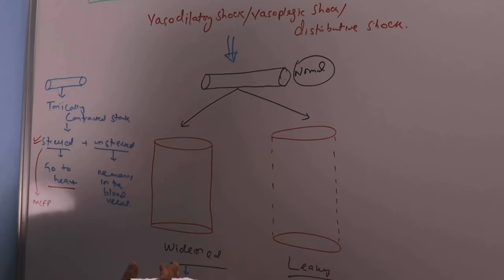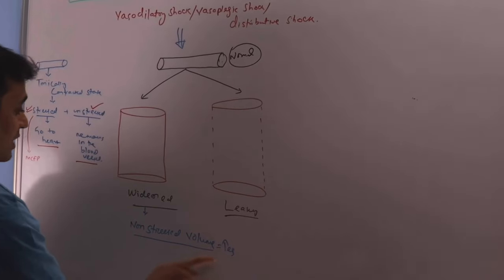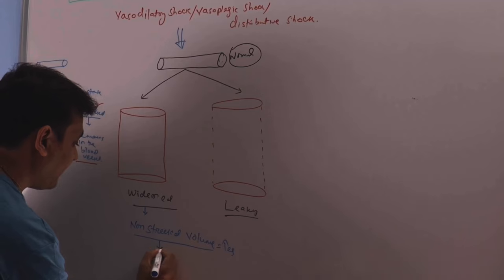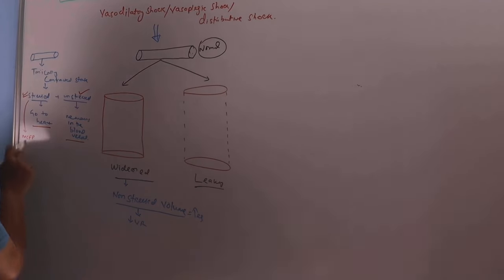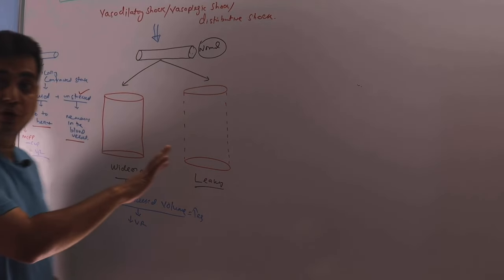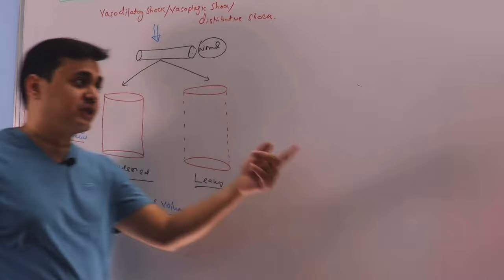When the blood vessel dilates, the tonically contracted state is gone. So the volume that is under pressure now become the volume that is not under pressure. So it changes to unstressed volume and the unstressed volume do not go to the heart. So when the non-stressed volume or unstressed volume increases that will cause the venous return to decrease. With the stress volume that determines the mean capillary filling pressure and the difference from CVP determines the venous return. If it is getting too much for you in this class, we will discuss in detail in our hemodynamic master classes.